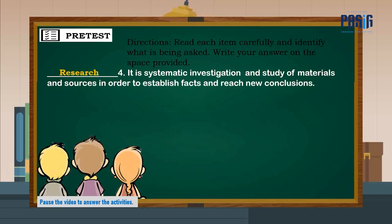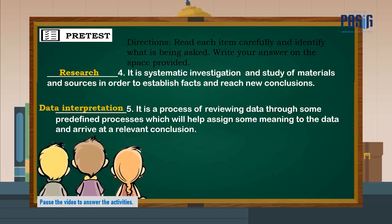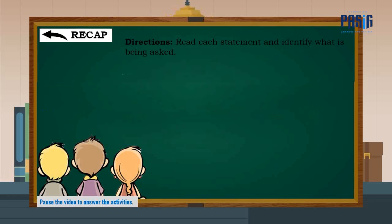The answer is research. Number five: it is a process of reviewing data through some predefined processes which will help assign some meaning to the data and arrive at a relevant conclusion. The correct answer is data interpretation. Now let us answer the recap — this part of the module provides a review of concepts and skills that you already know about the previous lesson.